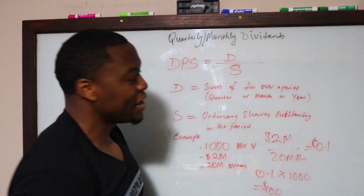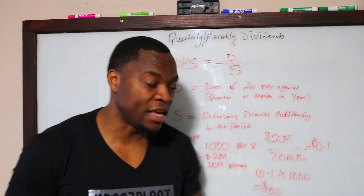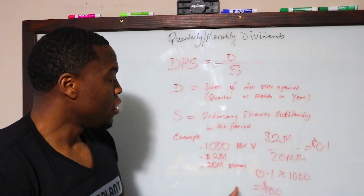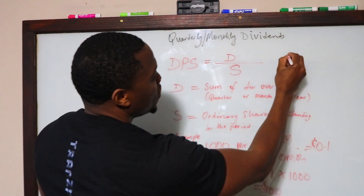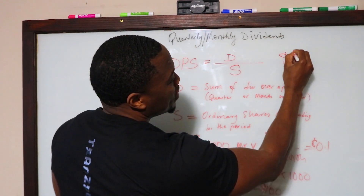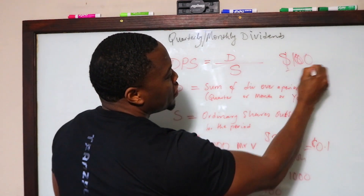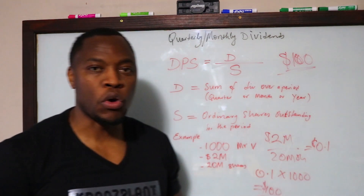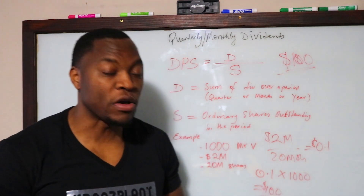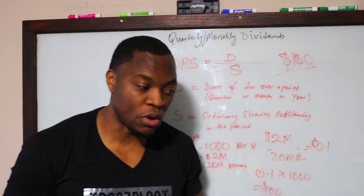And that gives you about $100. So at the end of the month, if you own a thousand shares of Mr. V, based on this example, you get $100 deposited into your account. That is how you calculate dividends per share.